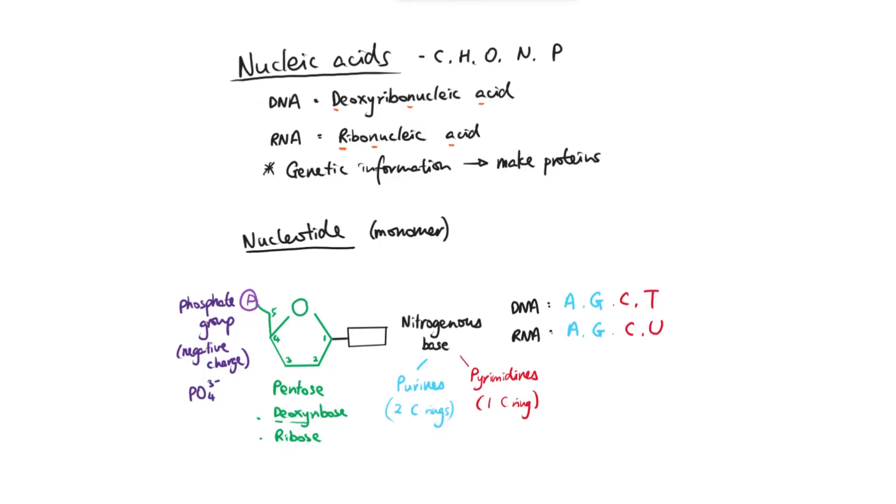We can have two types of nucleic acids like DNA and RNA, and both nucleic acids are actually made up of nucleotides which is the monomer for the nucleic acids. And each nucleotide is made up of three particular components: we've got the pentose sugar, the phosphate group, and the nitrogenous base.